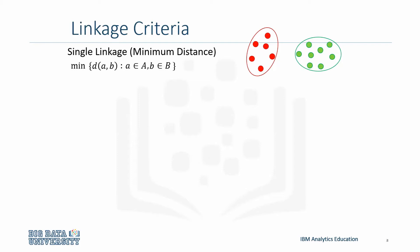Let's quickly analyze this equation. We have a point A which exists in cluster A. We also have point B which exists in cluster B. So the single linkage would be the minimum distance between the two clusters, which will of course be points A and B.